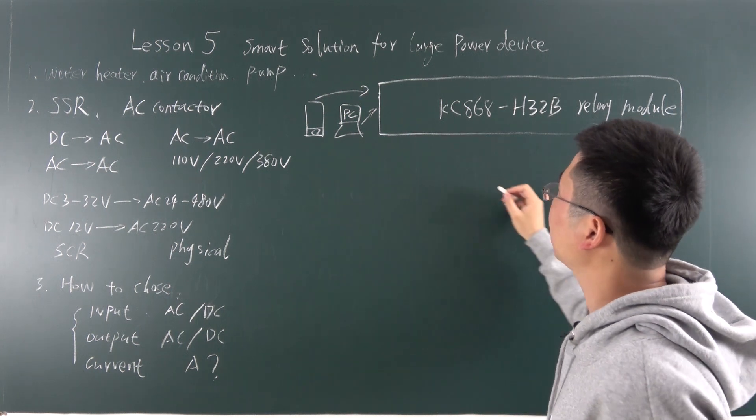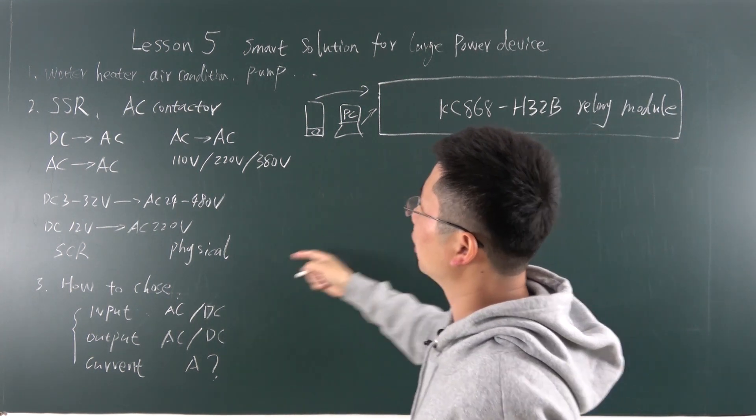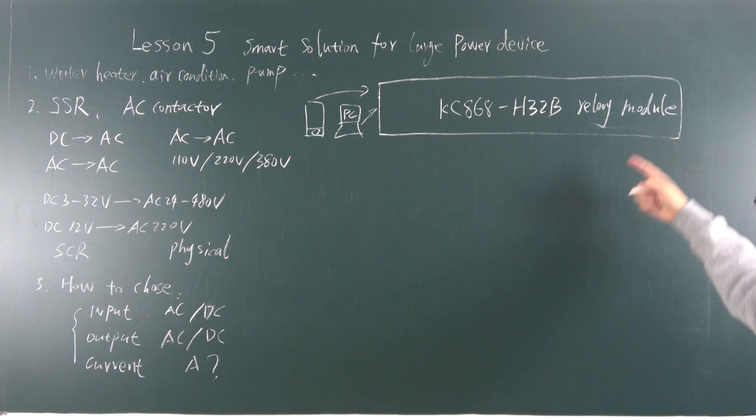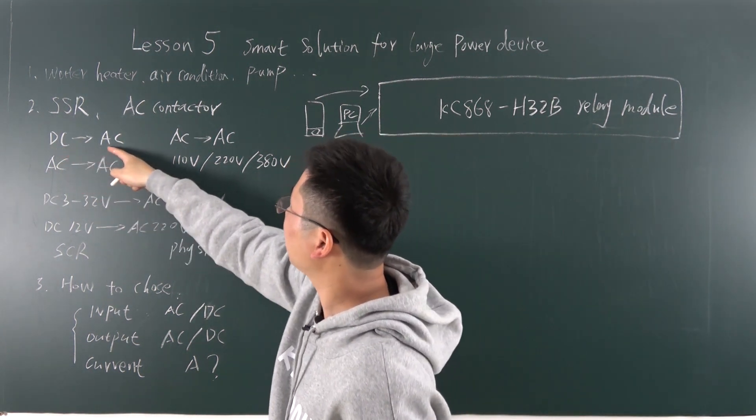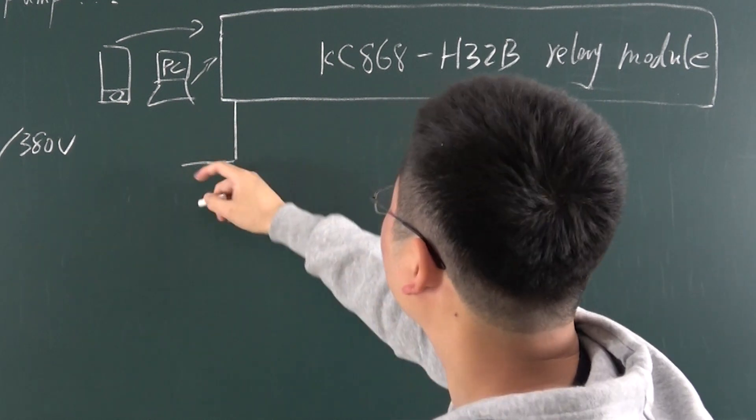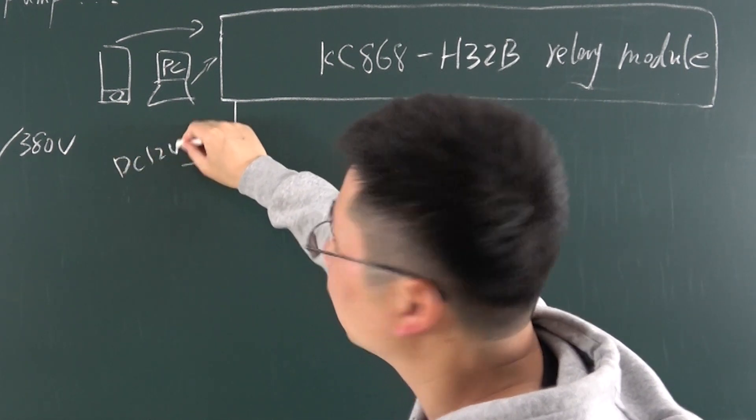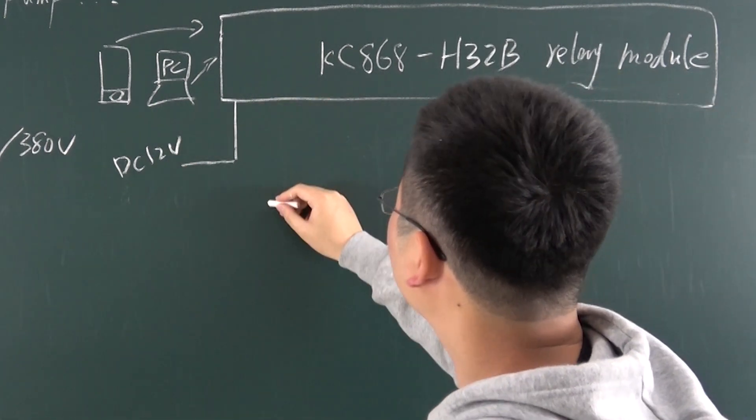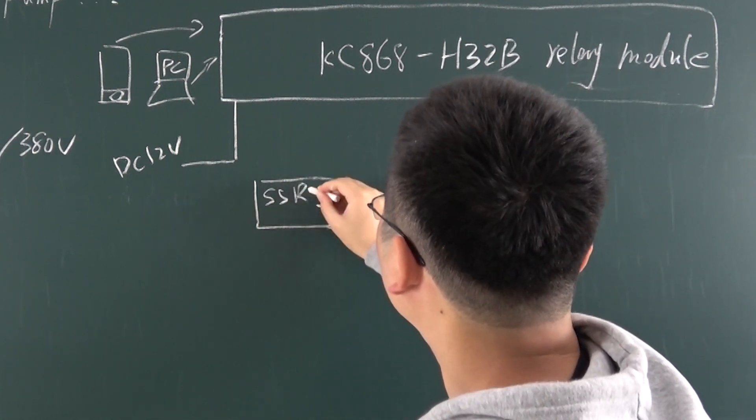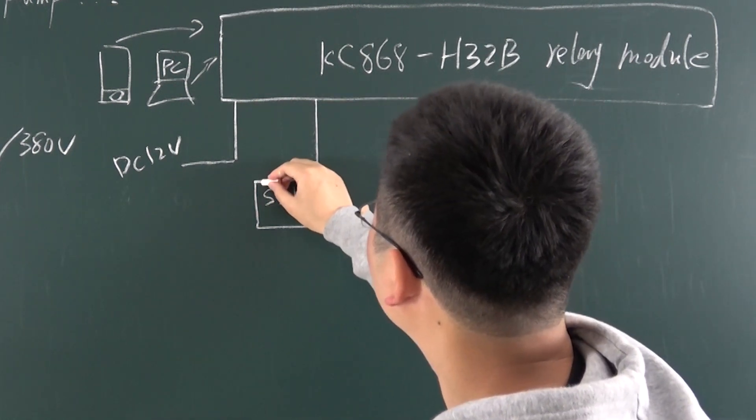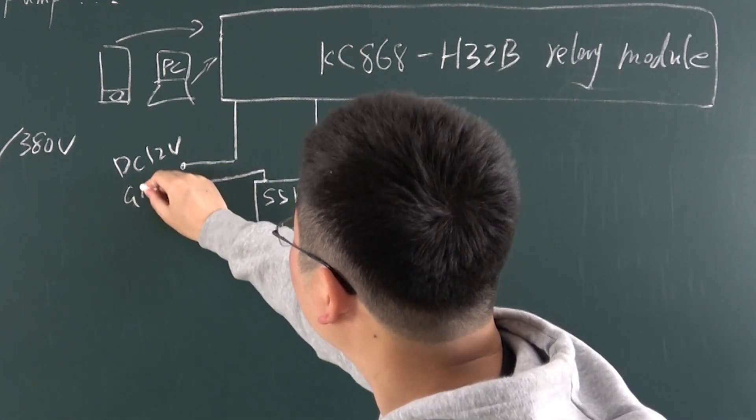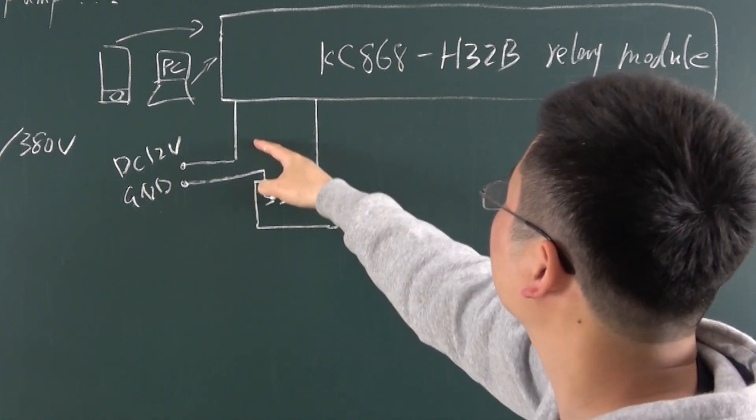We have drawn a diagram to show you how to connect the SSR or AC contactor to the H32B relay module. For example, we use the DC control AC. So you can, this is 12 voltage DC, 12 voltage. And this is output. And this is SSR. This is 12 voltage. And this is ground. And to this SSR.